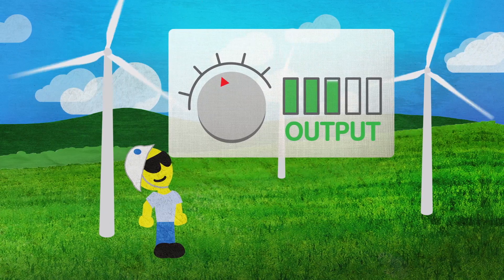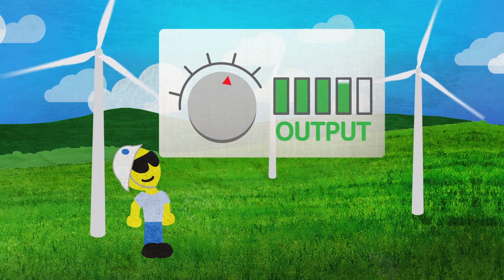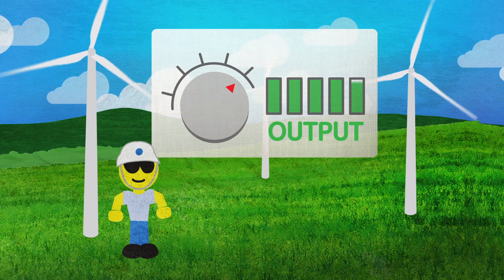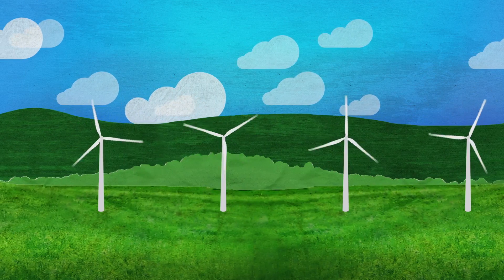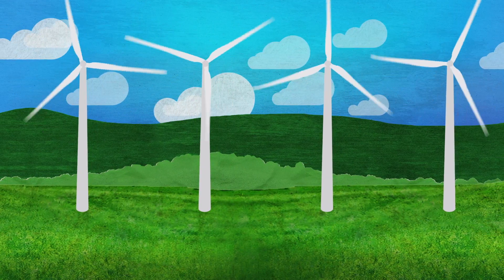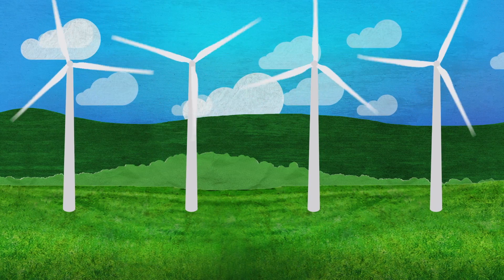We'll assess the environment and conditions, and propose a customized offering that will increase your farm's output by up to 5%. Up to 5% more power is big—it translates to up to 20% more profit per turbine on your farm.